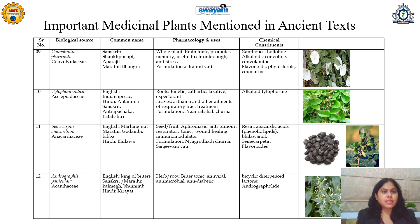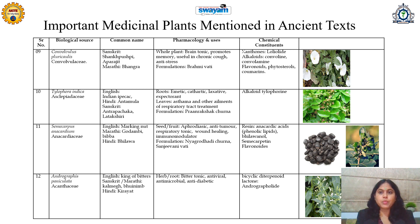The next important traditional medicinal plant is Convolvulus pluricaulis, belonging to family Convolvulaceae. In Sanskrit, it is called as Shankhapushpi; in Marathi, it is called as Bangra. Its whole plant is useful and it is used as a brain tonic. It promotes memory and is useful for anti-stress efficacy, due to the presence of xanthones, alkaloids, flavonoids, and phytosterols. Its popular formulations are Brahmi vati or Shankhapushpi syrups, which are available as OTC products used mostly by students for memory enhancement during exams.